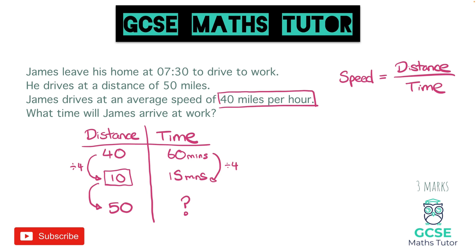We could just add that on to the original — 40 plus 10 gives us 50, and 60 plus 15 gives us that total time. However, that's not always going to work. So to get from 10 to 50, we multiply by 5, and we do that to the other side as well. The 15 minutes multiplied by 5 gives us 75 minutes. I'll put 'mins' next to it so I remember that's an amount of minutes.